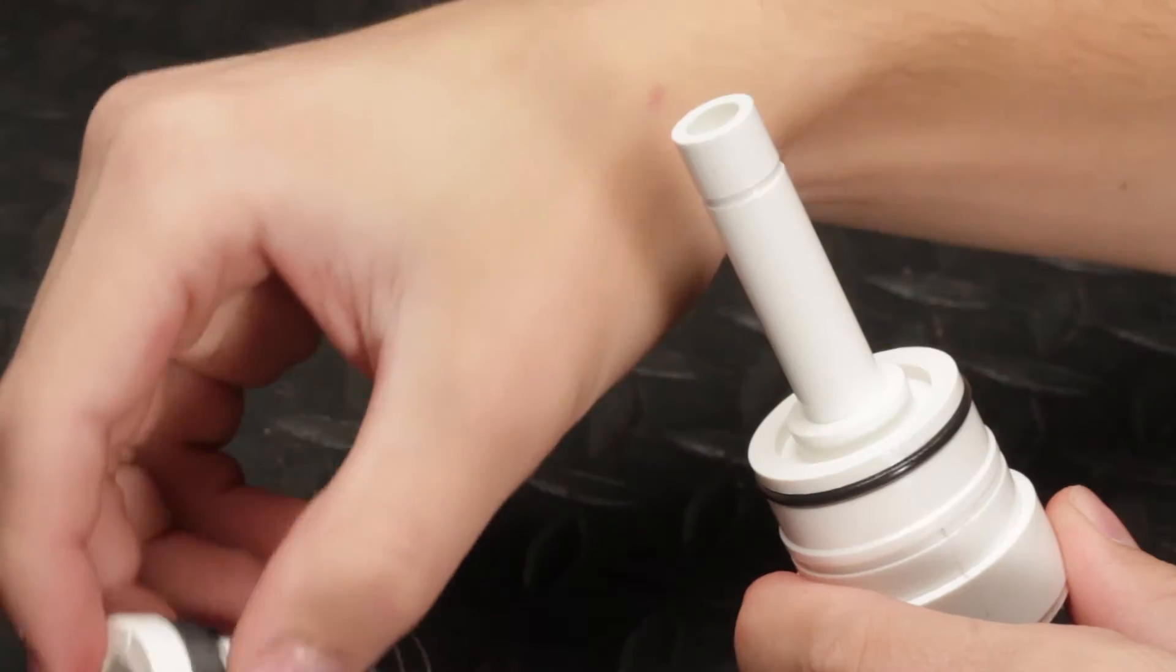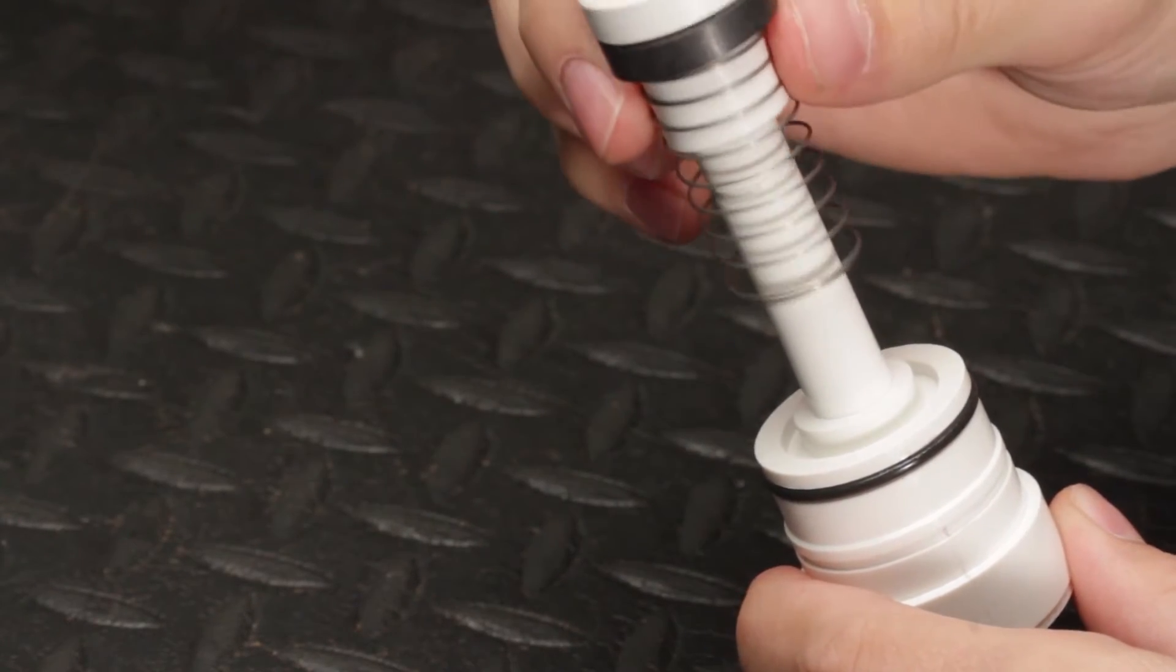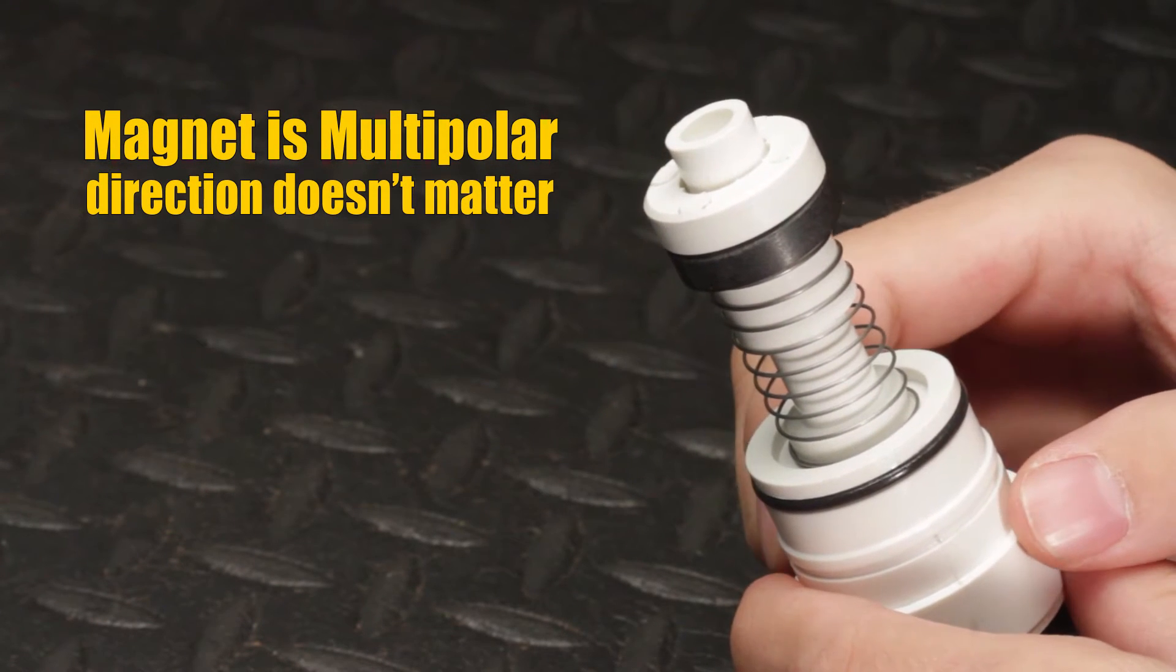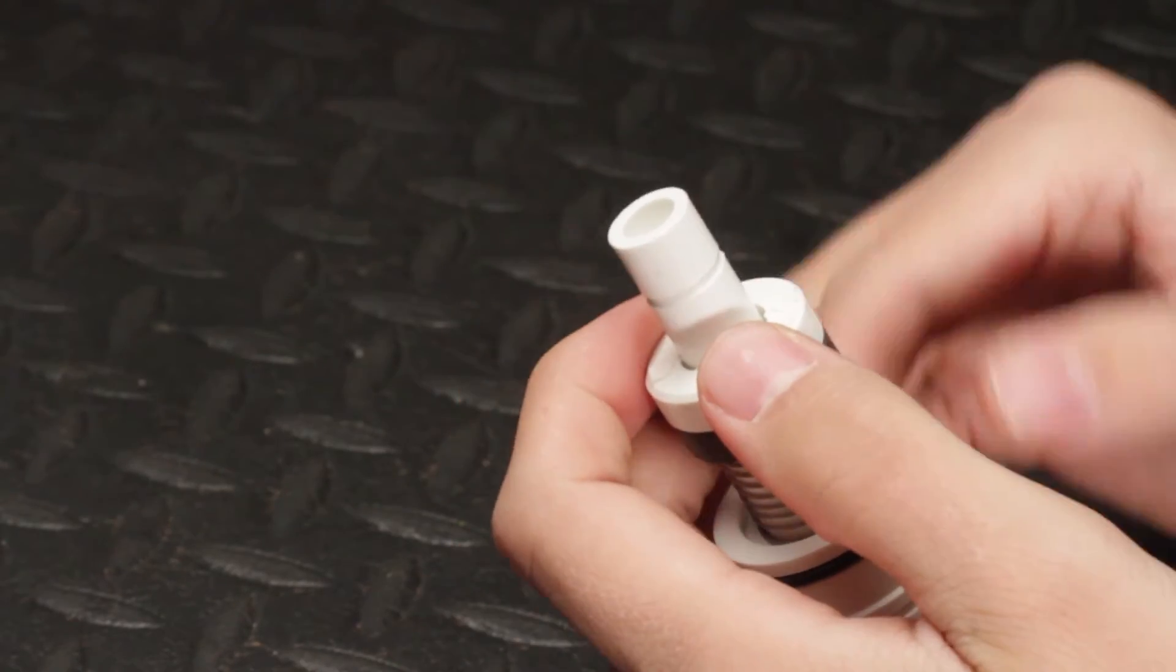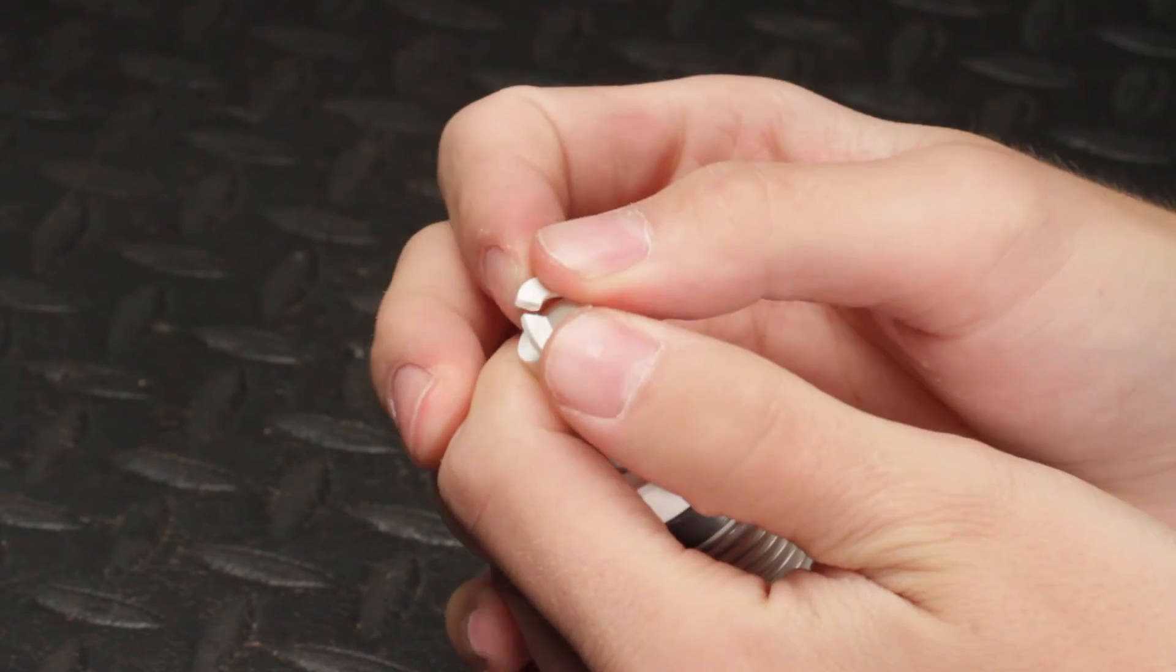Next, reinstall in order the spring, magnet, and shuttle. The magnet is multi-polar, so it doesn't matter which direction it's installed. Also, make sure the magnet is totally seated on the shuttle and moves freely.